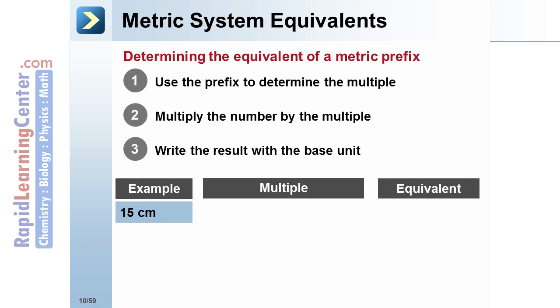15 centimeters. We'll start with the prefix. The prefix centi means 0.01. Multiplying by that gives us 0.15 meters. Here we have converted 15 centimeters into the equivalent amount of the base unit, meters.